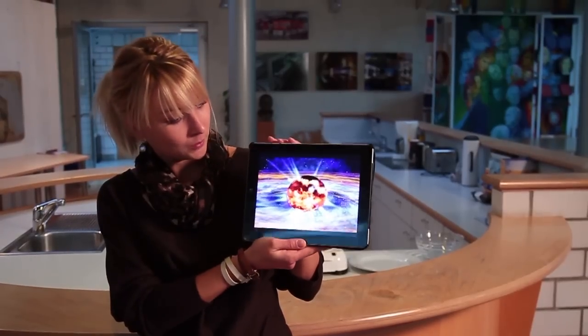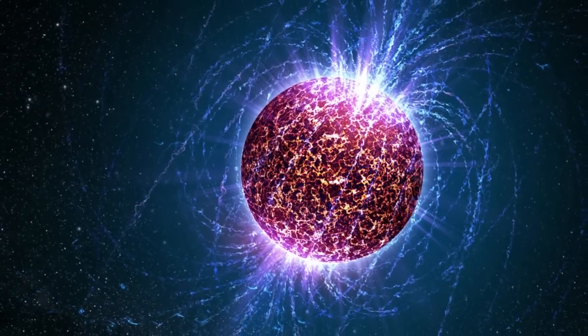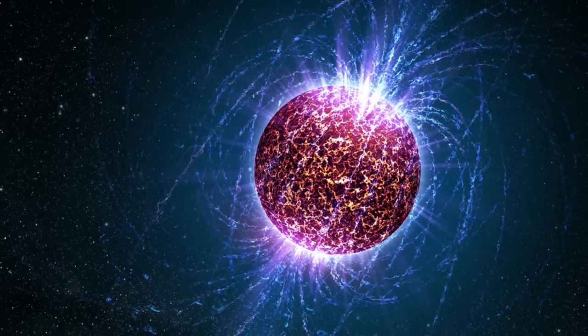The neutron star is an object which survives after the supernova explosion, and here just an example how this neutron star could look like. As the name says already, neutron star is an object which consists of neutrons, and these neutrons pack together such that the densities which one can achieve in this neutron star are extremely high.